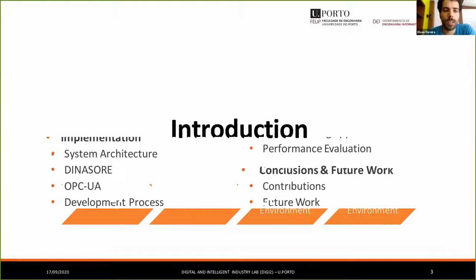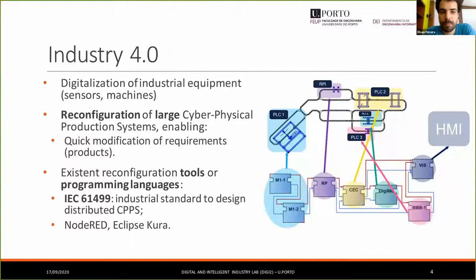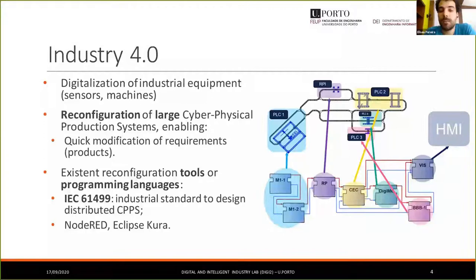Starting with the introduction. As you probably know, Industry 4.0 brings us several advantages, like the digitalization of industrial equipment, which enables connectivity between different kinds of devices and makes larger the networks and the cyber-physical systems. Regarding that, it is important to have good tools to reconfigure the cyber-physical system in order to have a quick modification of requirements. For example, if you want to produce a new product, you don't need to go to the equipment itself and reprogram it — you can perfectly reconfigure it from a remote computer and easily change your production targets and production line.